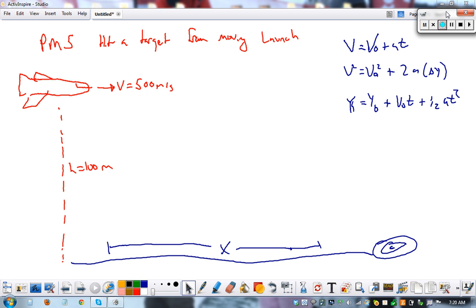This is projectile motion topic five where we're hitting a target from a moving launch. In class we did an example where we rolled a ball off the table and tried to predict how far away from the table we should put the target or the cup. I just want to give you a slightly different version to demonstrate that it's the exact same process.